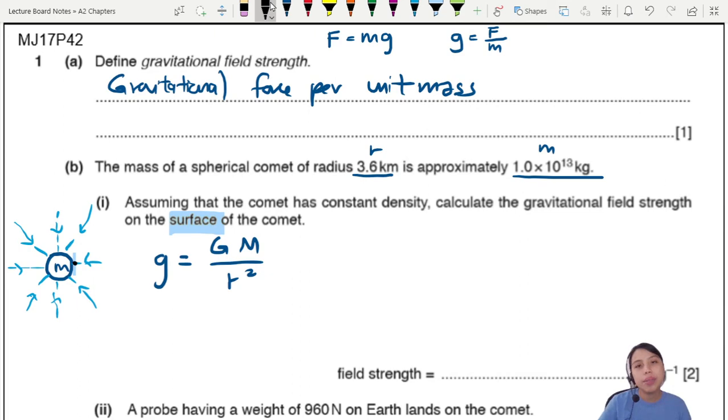Not flying in space far away. You are a dot on the surface of the comet asking what is the field strength. This R here, small r, is the distance from center to the position wherever you are. From center to the surface, that is going to be the radius of the comet itself.